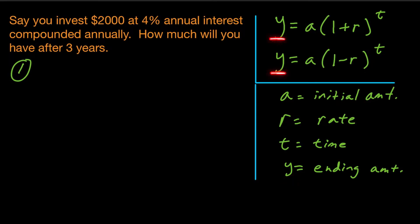And then y is the ending amount. So what you end up with after t years or t months or t days, depending on the problem. So this whole base here, this 1 plus r, that represents the growth factor. And this 1 minus r here represents the decay factor.